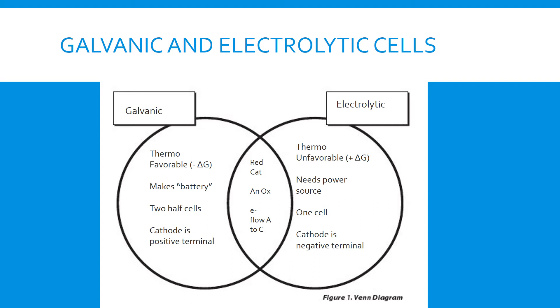One thing that you want to make sure you do not get confused with is the things that do not change no matter what type of cell that you have. If you have an electrolytic or a galvanic cell, that does not change the fact that the cathode is where reduction occurs. The anode is where oxidation occurs. And also, electrons will always flow from anode to cathode.